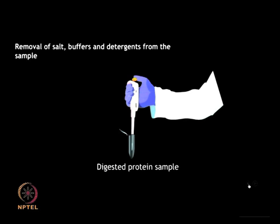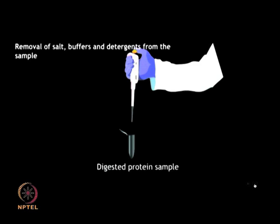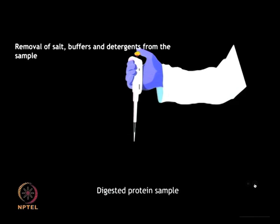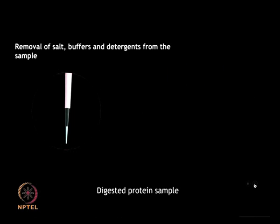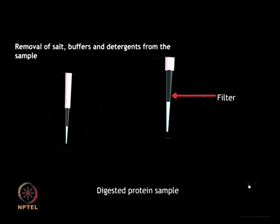Once the protein sample has been digested, all salt, buffer, and any detergent must be removed from the sample. After doing in-gel digestion and before proceeding for mass spectrometry analysis, an efficient step is to use some filters or zip tip, which can eliminate some of these contaminants and salts. It offers several advantages such as quick purification, sample enrichment, and ensures that there is no contamination. There are multiple advantages of using zip tips.